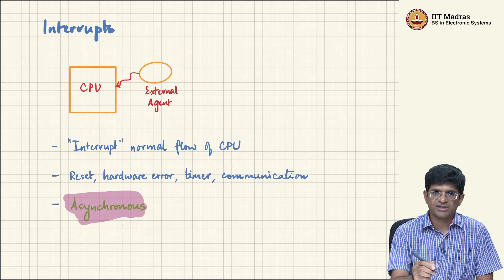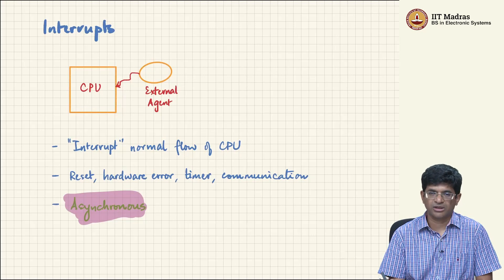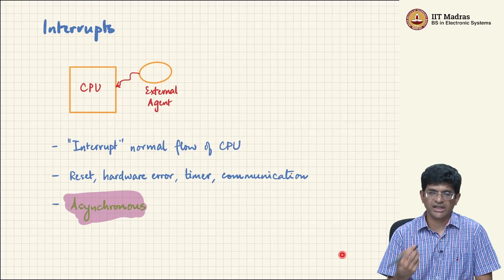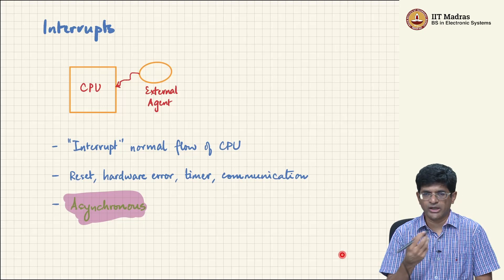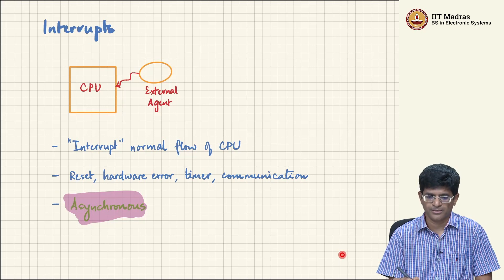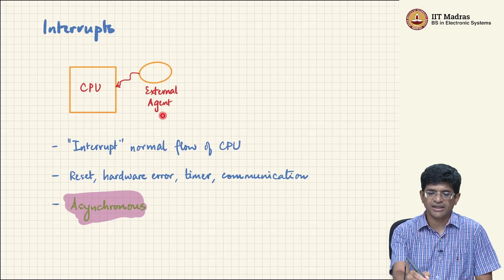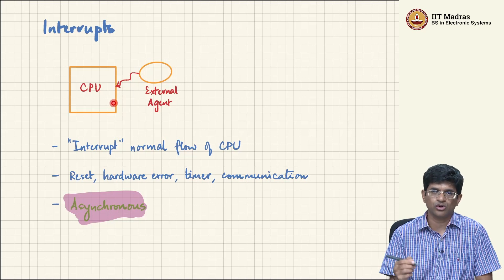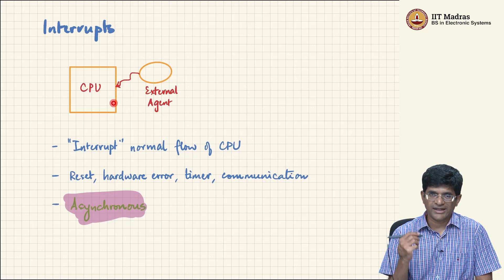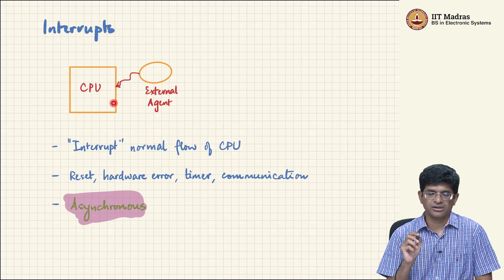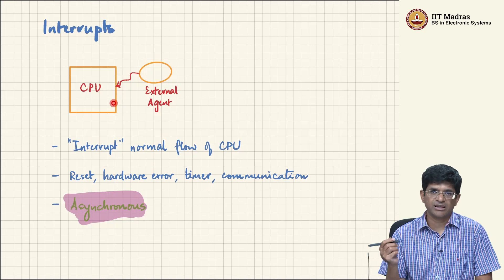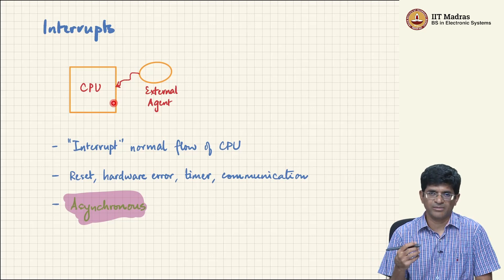The idea is that you have a CPU that is doing its work - fetching instructions, decoding them, executing them, modifying memory as requested by those instructions. But there are external agents that are constantly poking the CPU. It could be a reset condition, it could be some kind of a timer causing a particular pin to go high at regular intervals, or it could be a UART or some other peripheral that needs attention and wants the CPU to look into it.